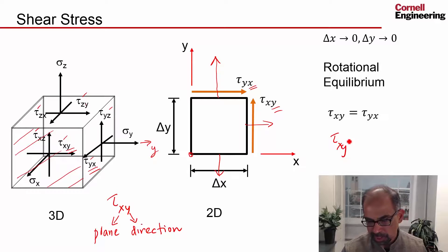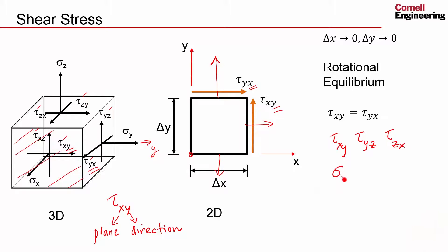So we have three shears left: tau xy, tau yz, and tau zx, and then we have the three normal stresses. To figure out all the forces on this vanishingly small chunk of material, we need these six stresses.